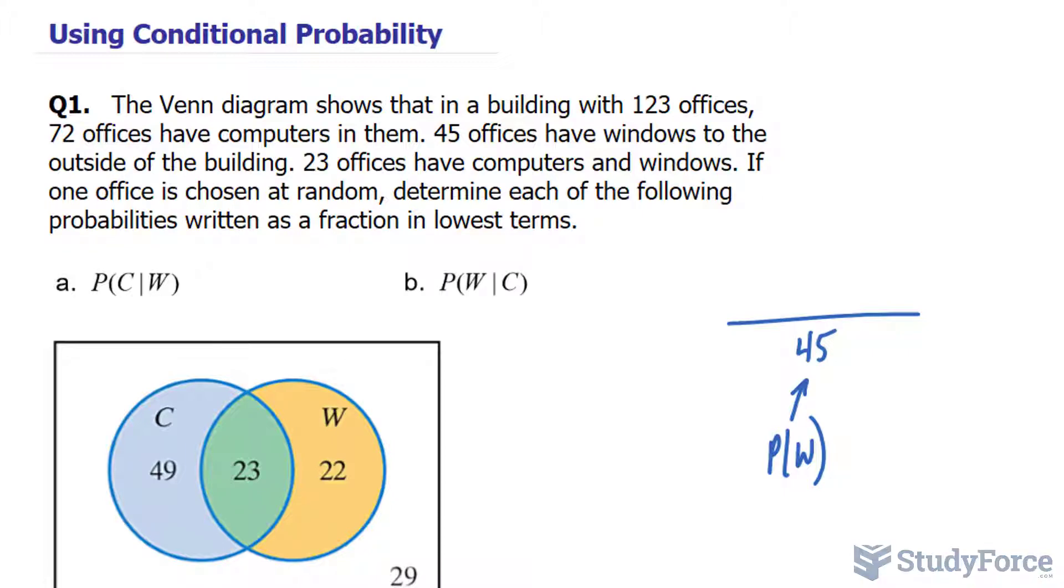That was given in the question. We're told that there are 23 offices that have computers and windows. So at the top here, if we want the intersection of W and C, that's the symbol for intersection, that upside down U,